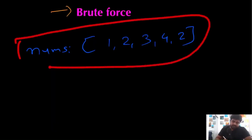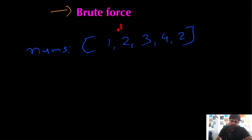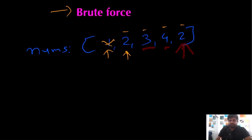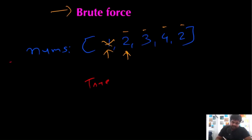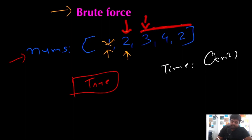For the brute force, we compare every single value with all other values in the array. We take value 1 and check if it appears again — it doesn't. We check value 2, and find a matching 2 later in the array. The moment we find a match, we return true immediately. This brute force works but the time complexity is O(n²) because for every element we compare all other remaining elements.